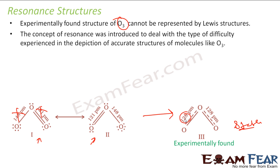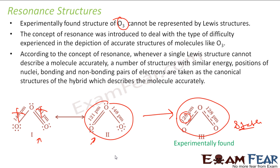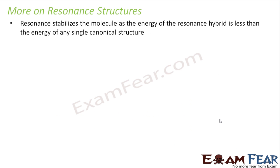The shorter the bond length, the more stable the molecule. This concept of resonance was introduced because experimentally they found one result, but using Lewis structures they found something else. Since the Lewis structure was experimentally not true, chemists introduced the concept of resonance. According to this theory, if a single Lewis structure is not able to explain the structure correctly, we take multiple structures — the resonance structure — which is more stable and represents the actual structure of the molecule. Please note that resonance stabilizes the molecule because the resonance hybrid energy is less than any single structure.